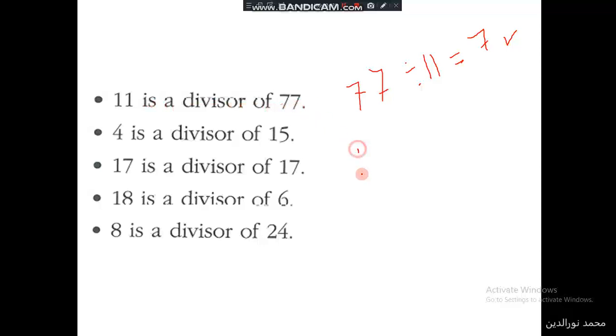There's another way. We ask ourselves, is there any number that's multiplied by 11 that gives us 77? Yes, there is 7. 77 is multiple of 11 then 11 is divisor of 77, and in this case if the remainder after the division operation is 0 then the number is a divisor.